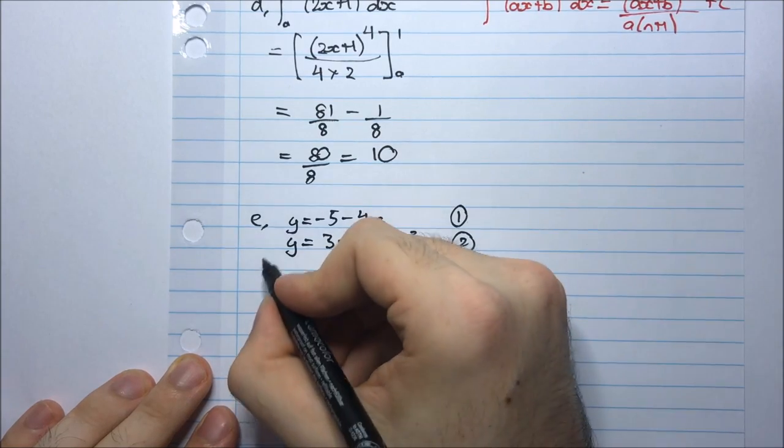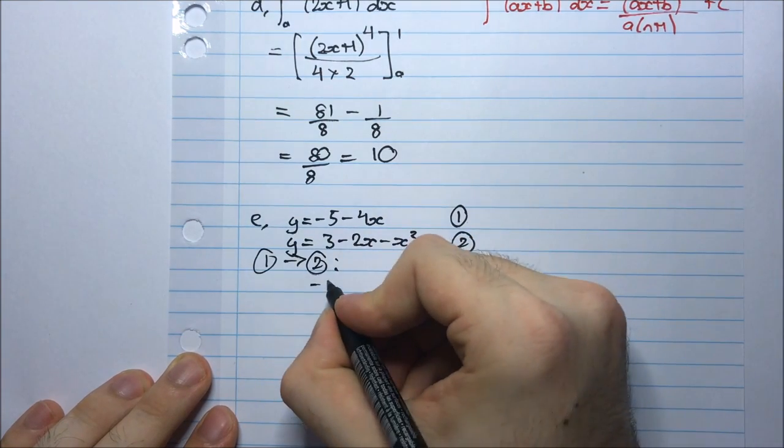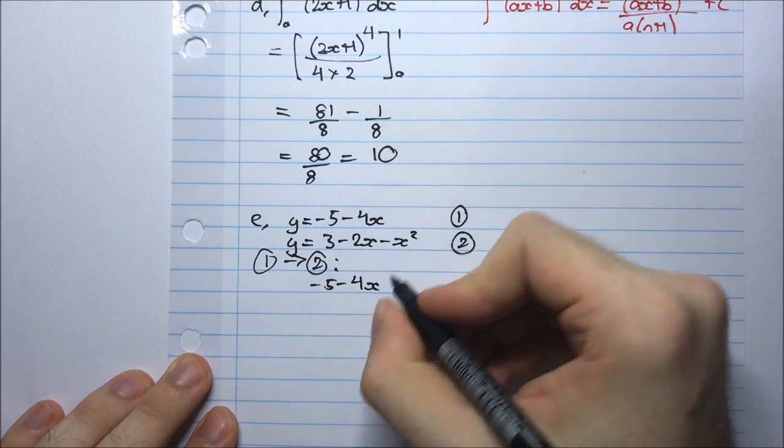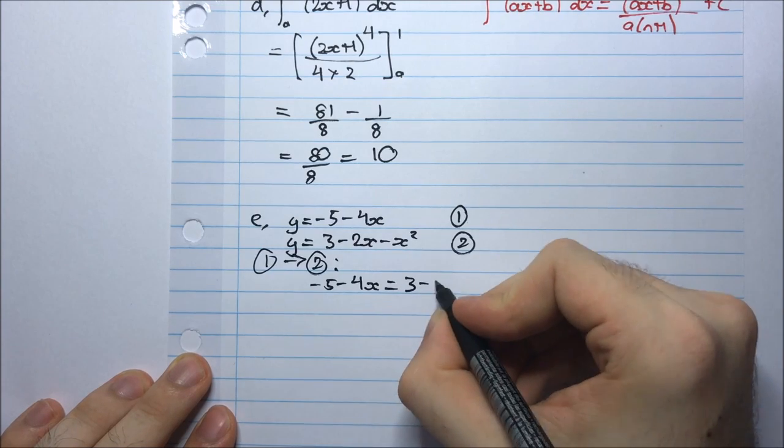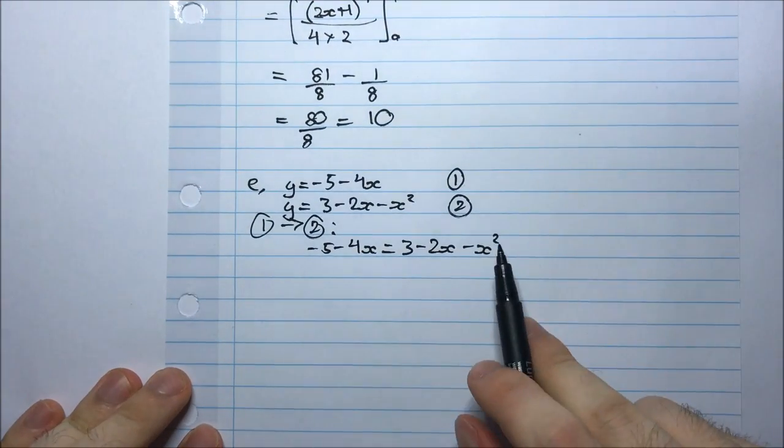Here's 1 and 2. So I'm equating 1 and 2 or substituting 1 into 2. -5 - 4x = 3 - 2x - x². Now let me get everything onto one side, so I'm going to bring all these onto the left-hand side.